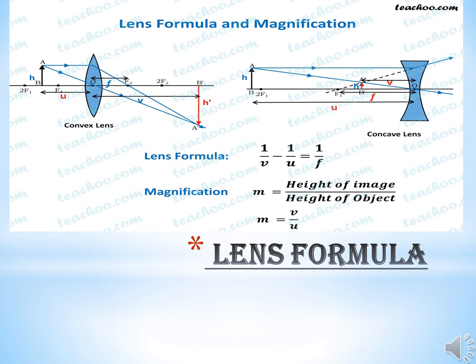The numerical value of M is greater than 1 if the image is magnified, equal to 1 for an image of the same size as the object, and less than 1 for a diminished image. Thus, the numerical value of M is always less than 1 for a concave lens, while it can be greater than, equal to, or less than 1 for a convex lens, depending upon the position of the object. By a convex lens, a real image is formed behind the lens, so U and V are with opposite signs. But by both the convex and concave lens, the virtual image is on the side of the object, so U and V are with the same signs.